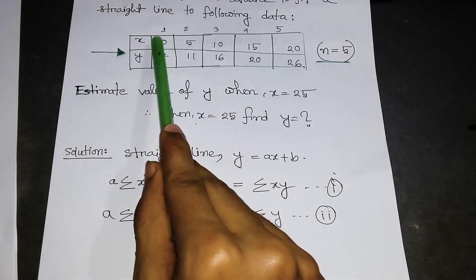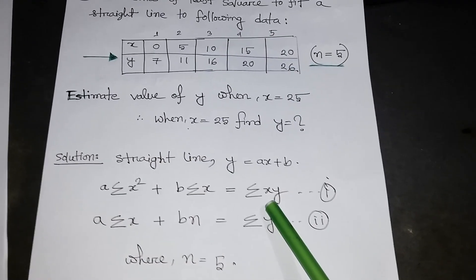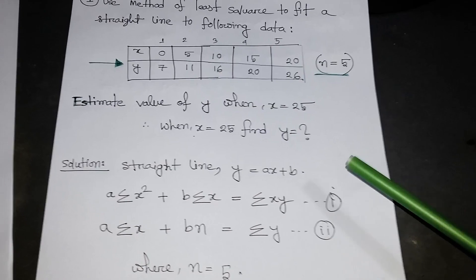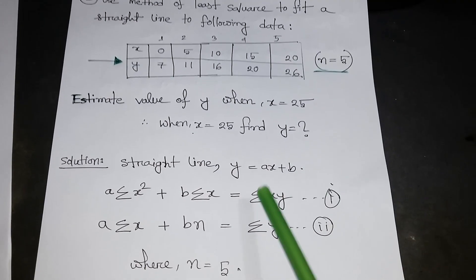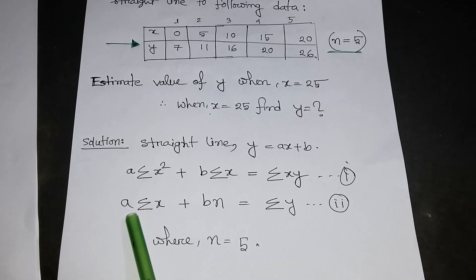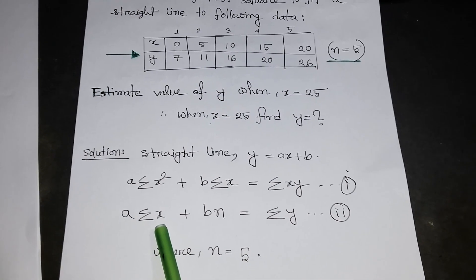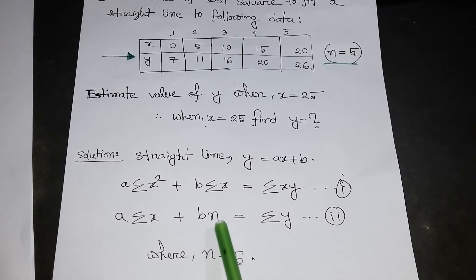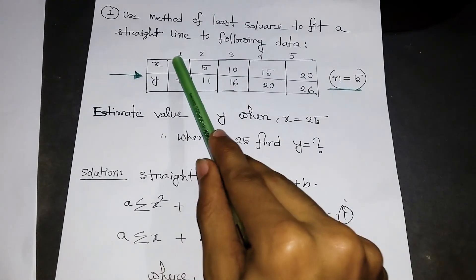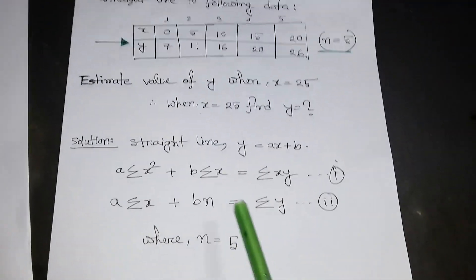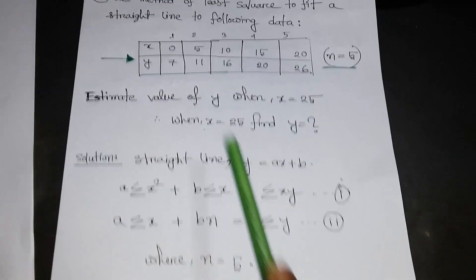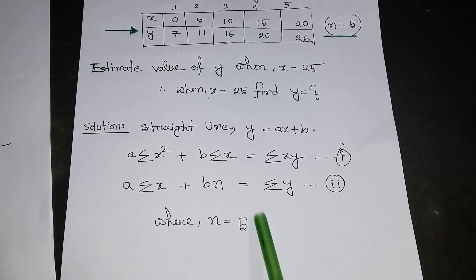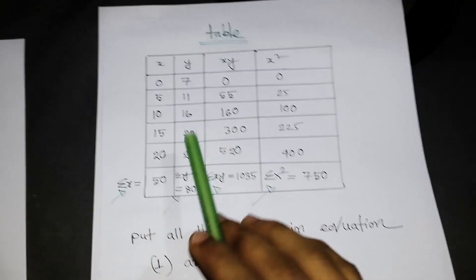The second formula is: a times the summation of X plus B times n equals the summation of Y, where n is the number of pairs, which is 5. These two equations together allow us to solve for the constants a and b.